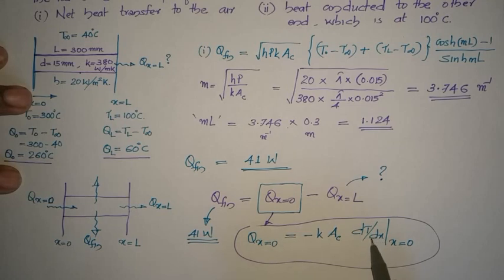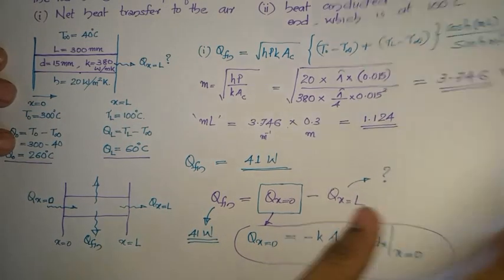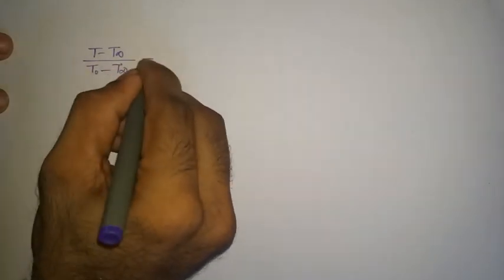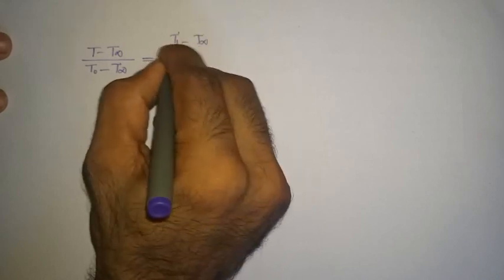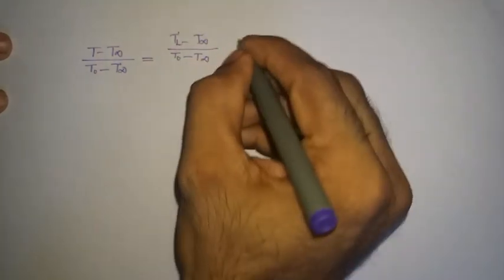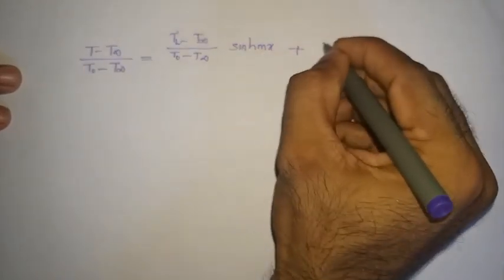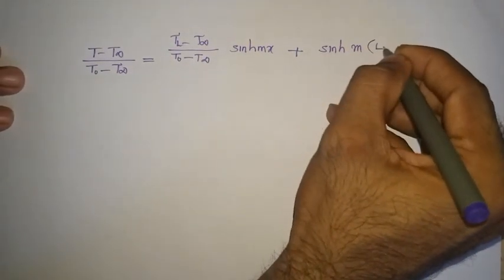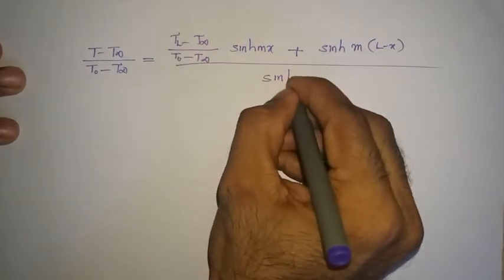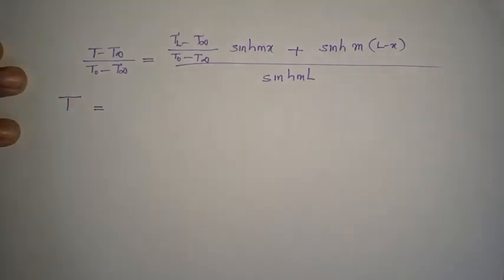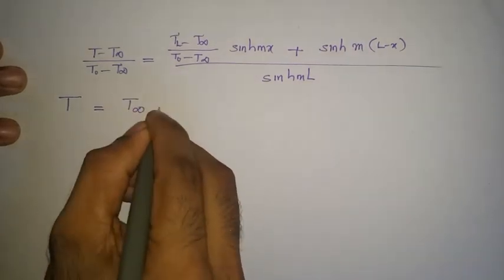To apply Fourier's law, we need dT/dx. As explained previously, the temperature distribution is: (T − T∞) / (T₀ − T∞) = [(T_L − T∞)/(T₀ − T∞)] × sinh(mx) + sinh(m(L−x)) all divided by sinh(mL). From this general temperature distribution, the temperature at any distance x can be found.